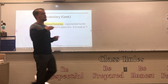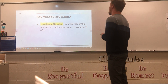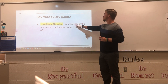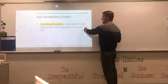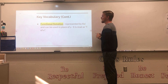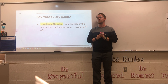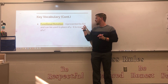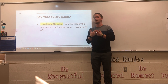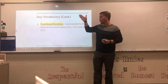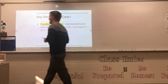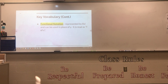Now we move into section 3.3 on functional notation. The key vocabulary word is functional notation, represented as f(x) — f with parentheses around x. It is read as 'f of x' and can be used in place of y. Where you previously saw the variable y, you'll now see f(x). For example, the y-axis might sometimes be referred to as the f(x) axis. Understanding functional notation and where you'll see it is very important.